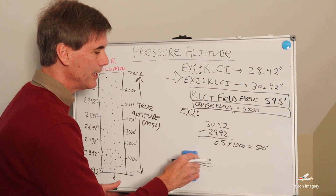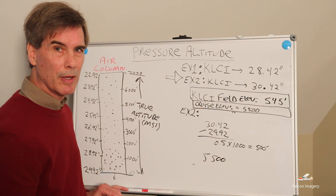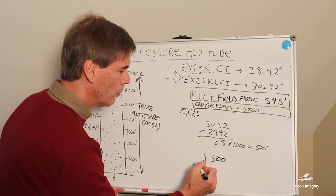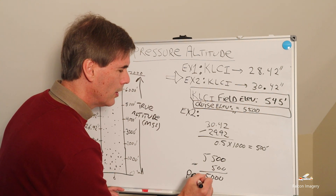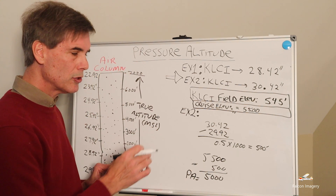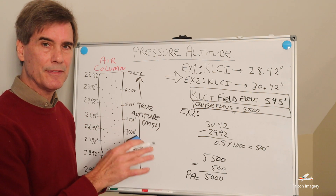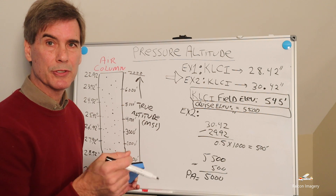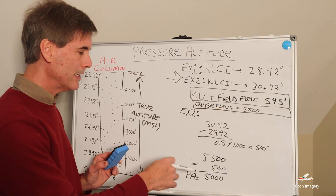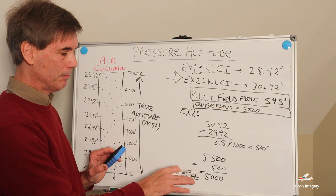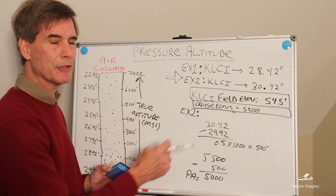The same applies for the cruise level — we were going to cruise at 5,500 feet. Based on this higher-than-standard pressure, we subtract 500 feet and get 5,000 feet. Our pressure altitude cruise number is 5,000 feet. The aircraft will truly be flying at 5,500 feet above the surface because we've put in the 30.42 inches in the Kollsman window on the altimeter, but how the aircraft will perform will be as if it's flying at 5,000 feet, giving slightly better performance.